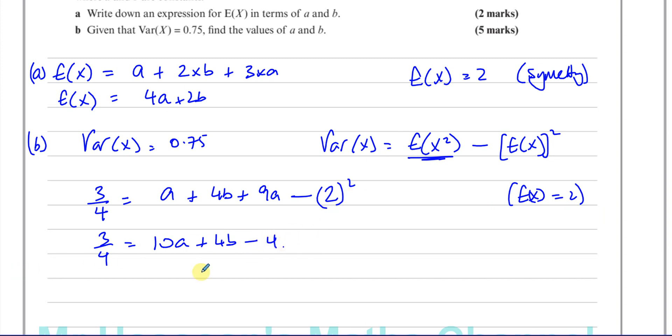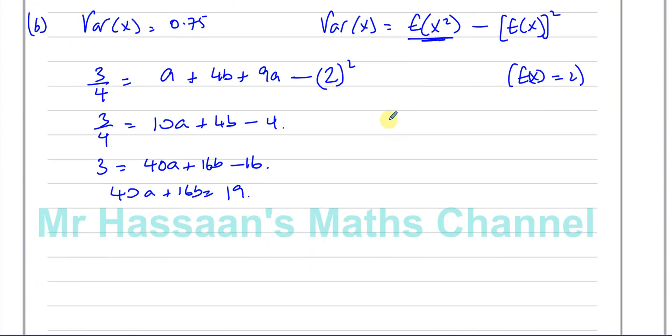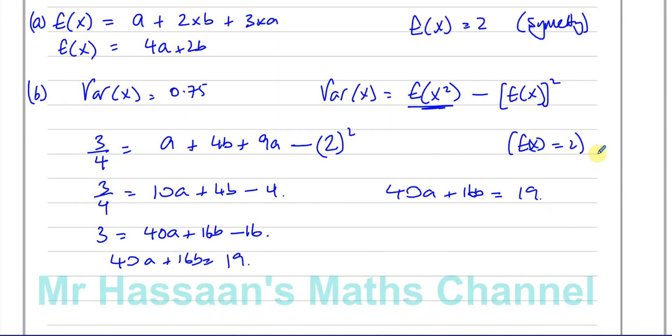So now what I can do is, I can say this is 3 quarters equals 10a plus 4b minus 4. Now, let's get rid of the fractions. Let's just multiply everything by 4. So you have 3 equals 40a plus 16b minus 16. So we can say that 40a plus 16b equals 19. And I have my other equation that I mentioned before, that 2a plus b equals 1, from the fact that the sum of the probabilities is equal to 1.